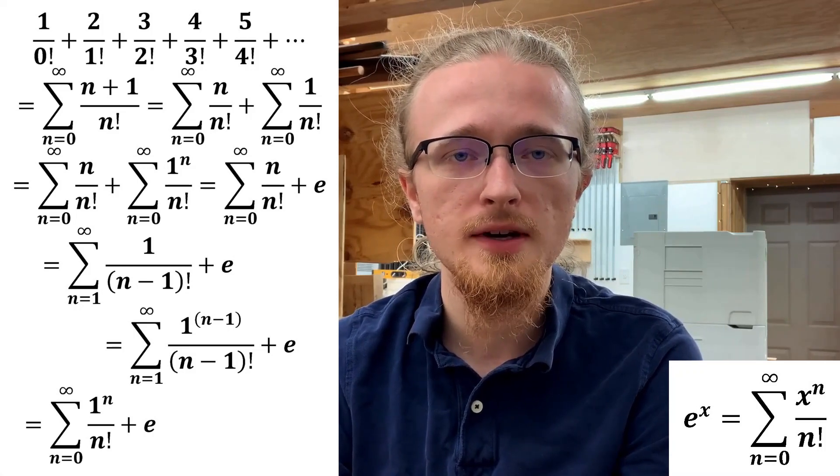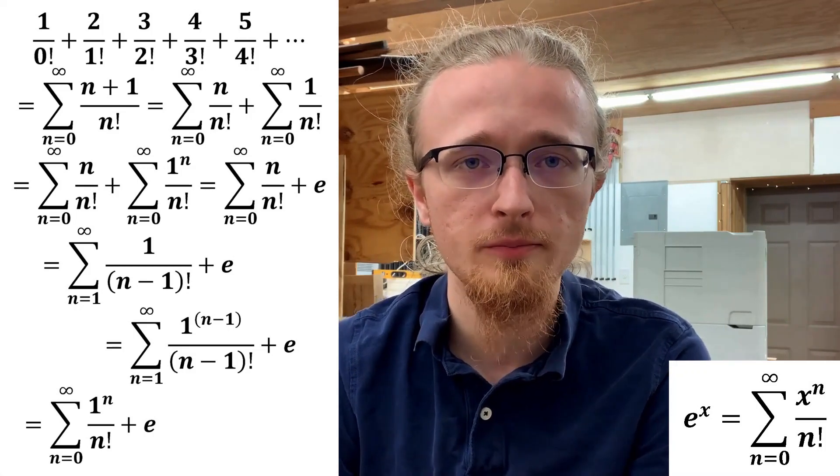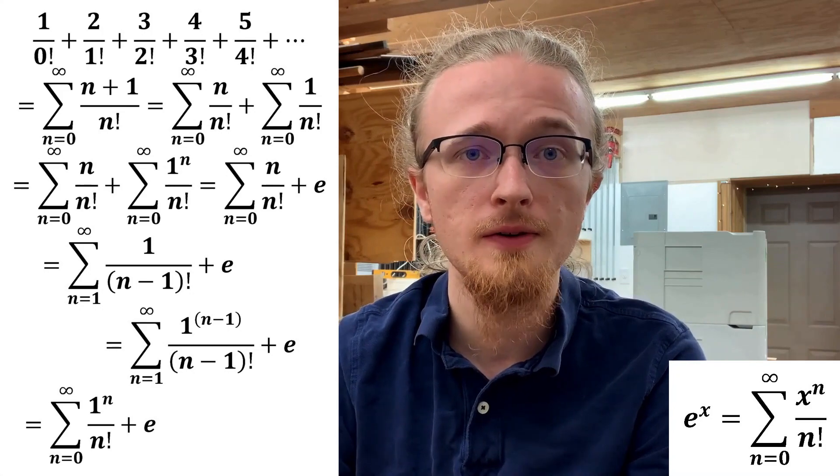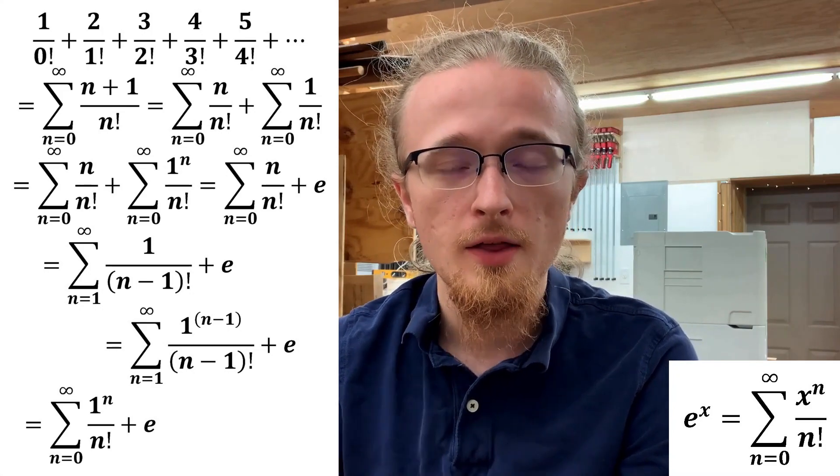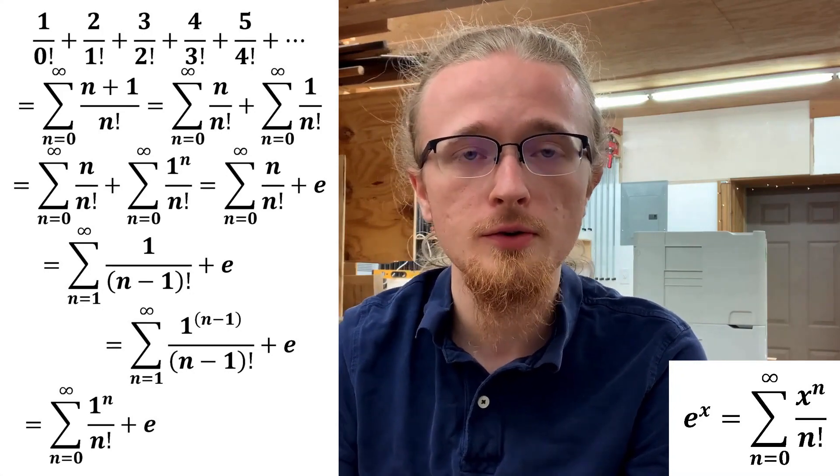With that final change done, the sum we're left with, again, is simply the Taylor expansion of the natural exponential evaluated at x equals 1. Therefore, the first term also just equals e to the 1, or e, and the overall series just equals 2e.